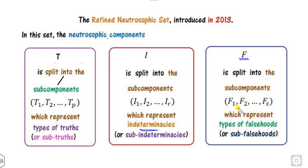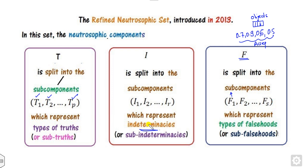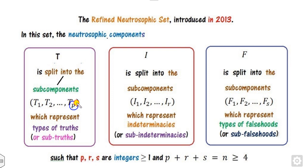F is split into s components, each representing the degree of falsity or non-membership. For example, if several experts evaluate an object, they can each provide a judgment such as 0.7, 0.9, 0.6, 0.5 — all representing different degrees of acceptance. These are t1, t2, ..., tp. The condition is that p, r, and s are integers and their sum n = p + r + s must be greater than or equal to 4.